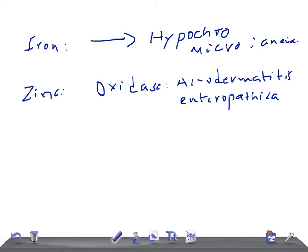Acrodermatitis enteropathica is really very important. Patients will have a distinctive rash most often around the eyes, nose, mouth, and anus — that's why it's called acrodermatitis enteropathica. If you google the images of acrodermatitis enteropathica, you will remember it for a longer time. The patient will also have anorexia, growth retardation, and infertility.